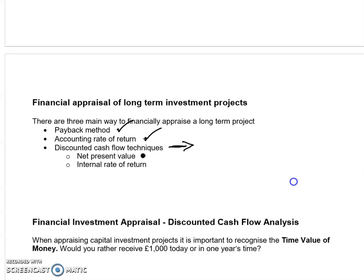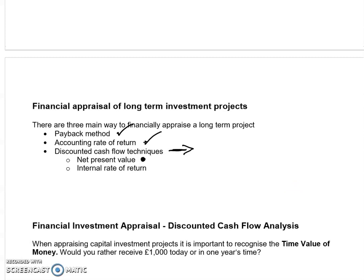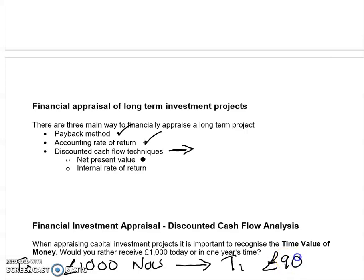With the discounted cash flow techniques, we're taking into consideration the time value of money. The idea is that if we have £1,000 now at T0, that is not worth £1,000 at the end of year one. We'd much prefer to have £1,000 now. In a year's time, that isn't going to be worth £1,000 because we've had to wait. The waiting means we would say it's worth £900 to us — so £1,000 in a year's time is actually equivalent in present value terms to £900.